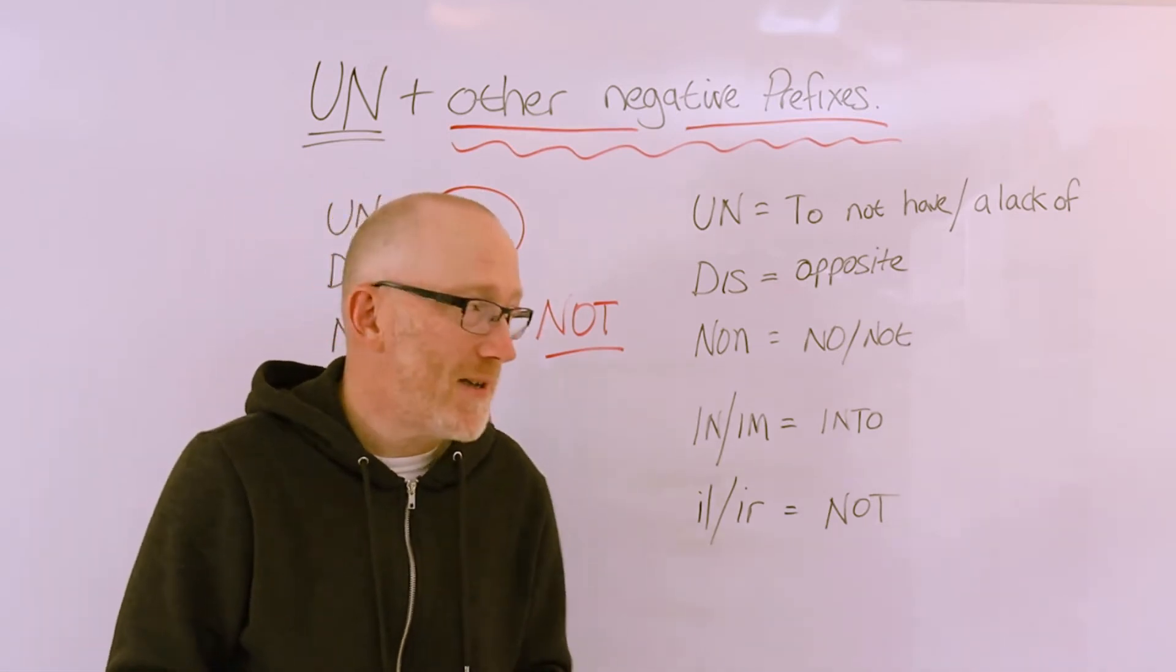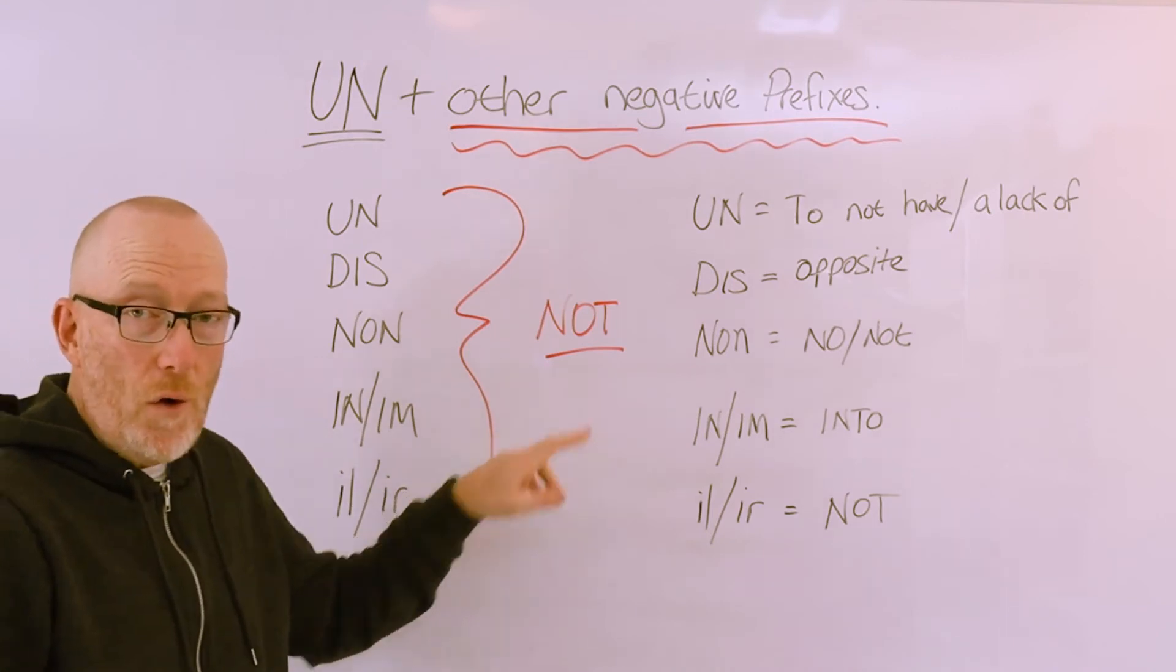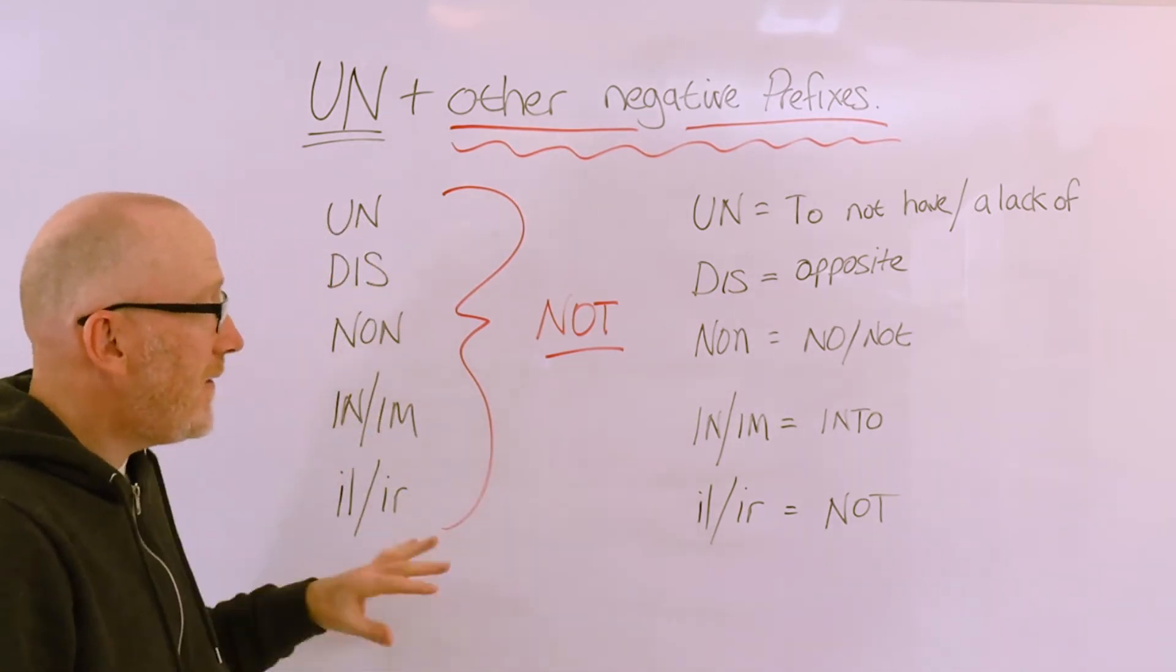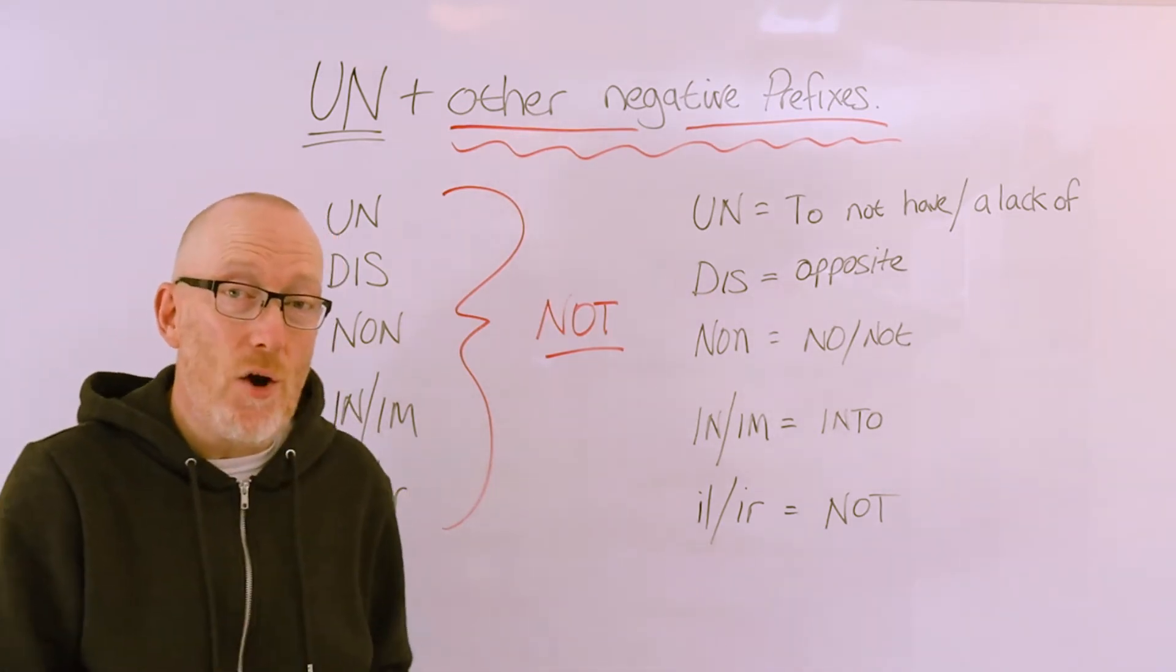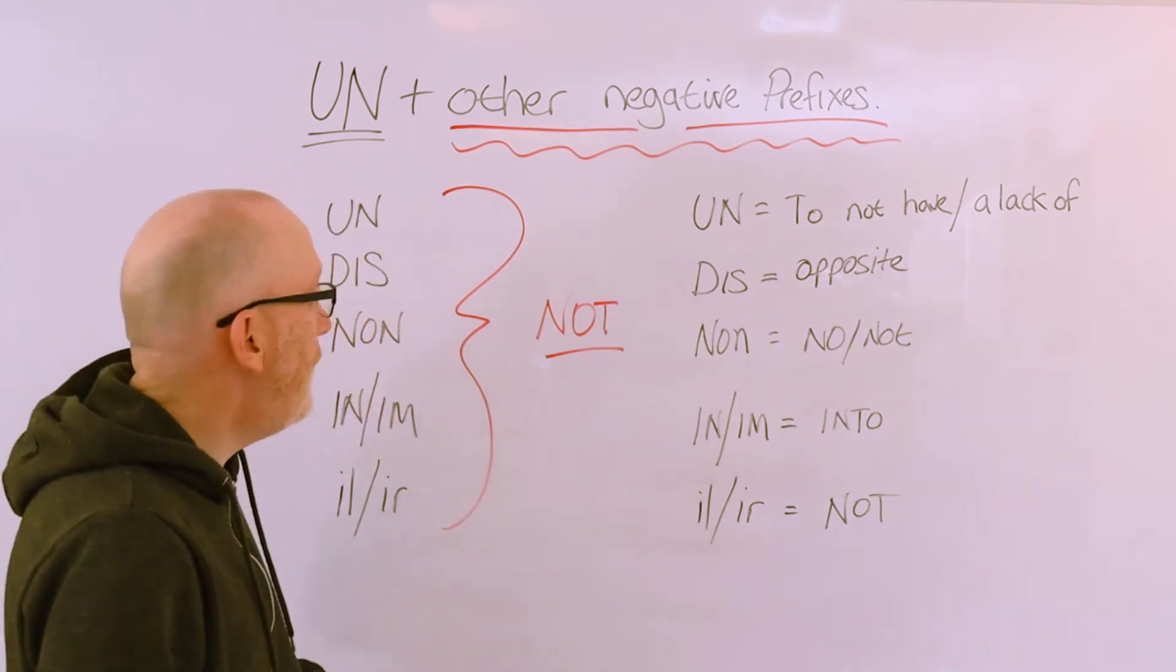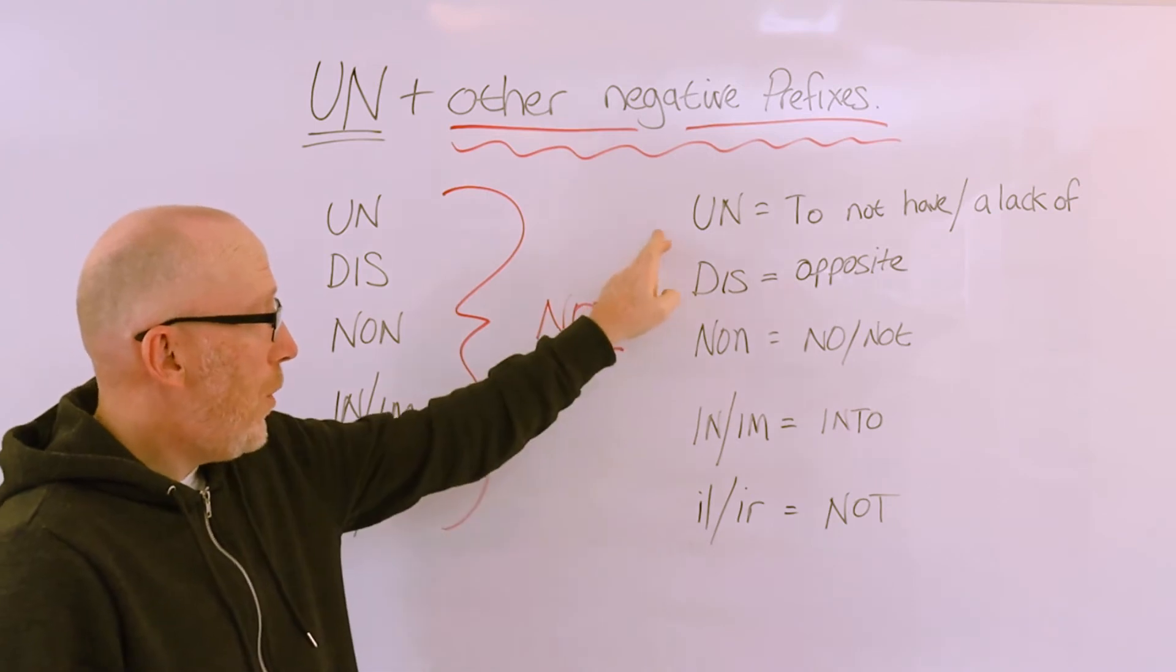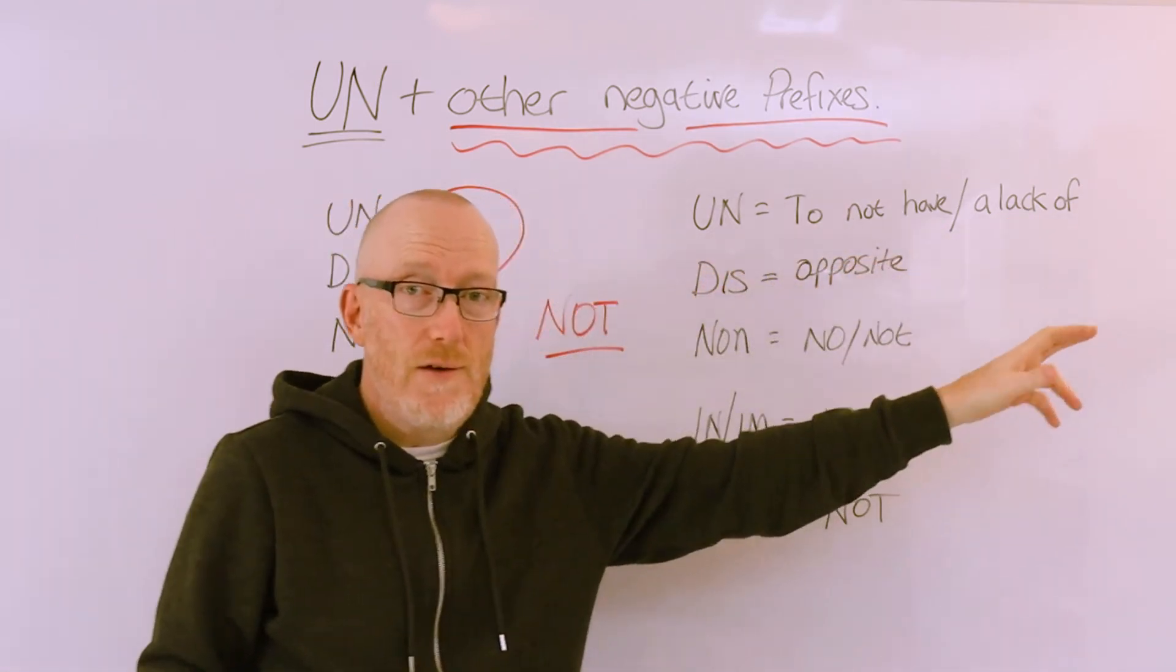As well as generally meaning not or negating a word, at least some of these prefixes also mean different things depending on how we use them. For example, UN might just mean not, but it also can mean to not have or to have a lack of something.